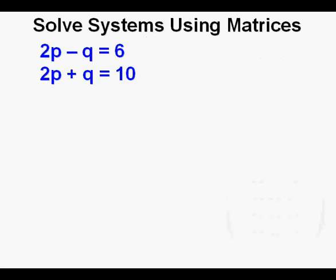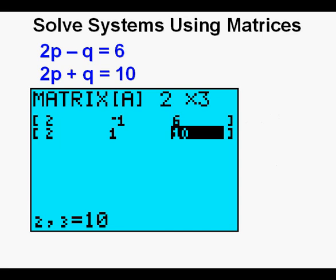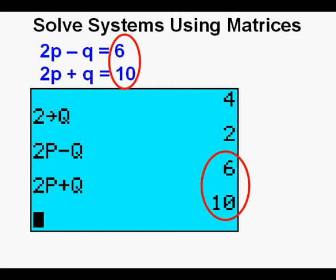Let's try another system: 2p minus q equals 6, and 2p plus q equals 10. Stop the video and solve this system using a matrix. Remember: press 2nd then x-to-the-negative-1 for the matrix menu, go to Edit first to enter the matrix, then go to Math for RREF, then solve using the Names submenu for matrix A. The solution is p equals 4 and q equals 2, which checks out giving 6 and 10 as expected.